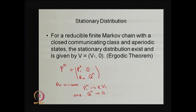In that case you will get the unique stationary distribution, which has two sub-components: a vector V1 and a vector of zero elements. Before obtaining the stationary distribution, we can find the n-step transition probability for the same reducible Markov chain model.